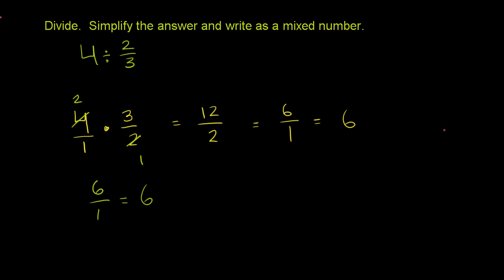Now, this could be a fun one to visualize. So let's think about what this is. 4 divided by 2 thirds. Let's draw four boxes here. Let me do this. So let's say I have 1, 2, 3, and 4.